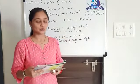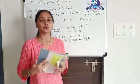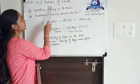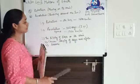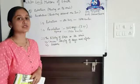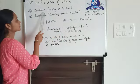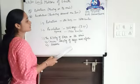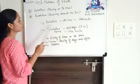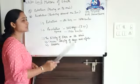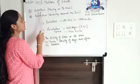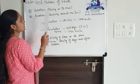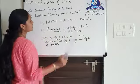Hello, today we will start with lesson number 2 of standard 7, social science. Lesson number 2 — motion of earth. In this chapter we will study about earth rotation, earth revolution, how due to rotation there is day and night, and how due to revolution there are seasons. Rotation means earth moving on its axis and revolution means earth revolving around the sun.